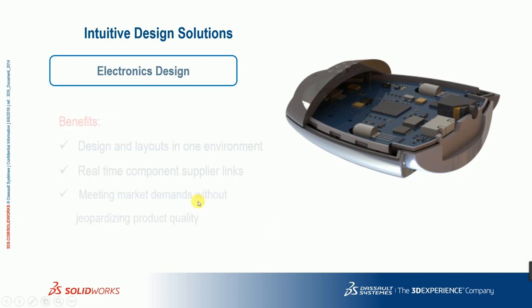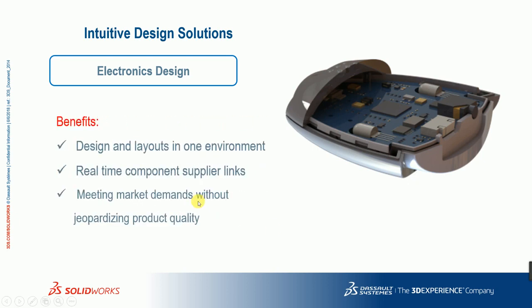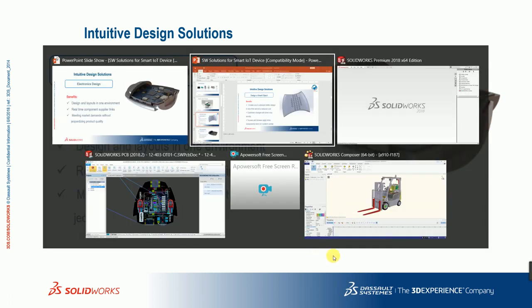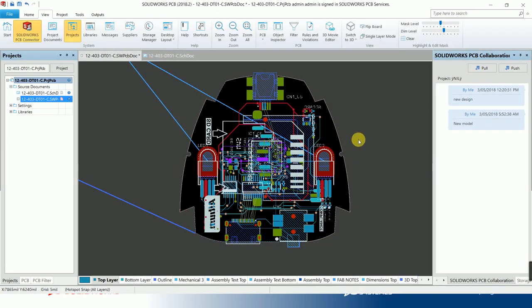Once the mechanical design is done, the electrical side is also simultaneously being worked on. Electronic design is also very easy to create using SOLIDWORKS PCB. You can design schematics and layouts in one environment to easily integrate ECAD and MCAD in a single stage. Once done, you can create real component links to supplier information and find out market demands without jeopardizing your product quality. Let me quickly take you through the electronics design area.